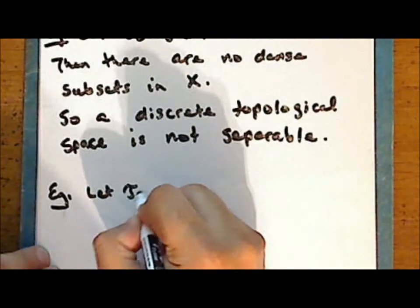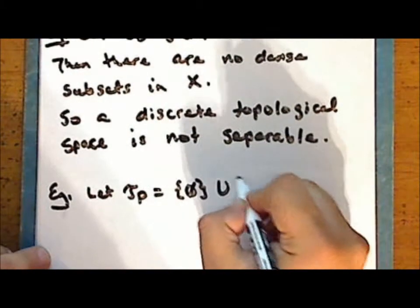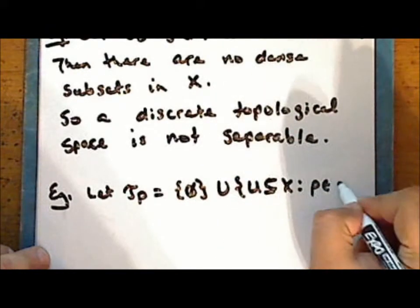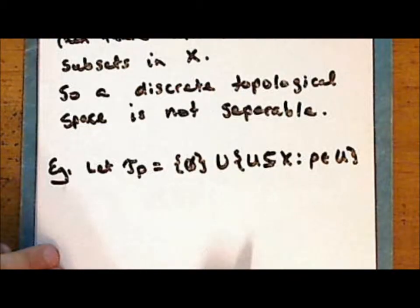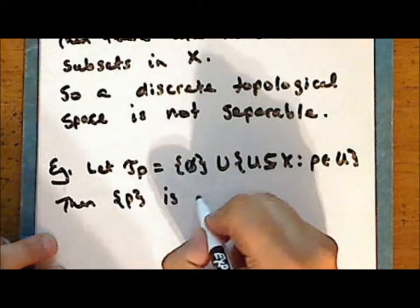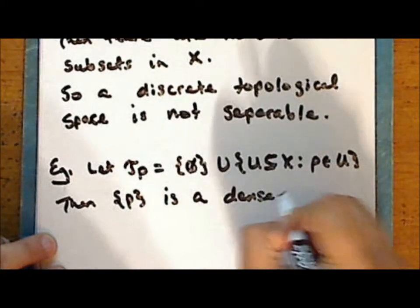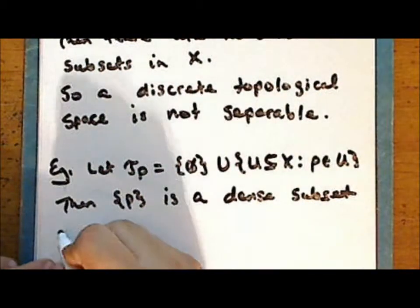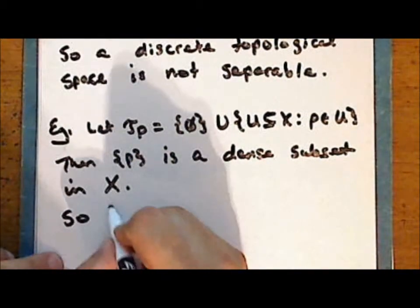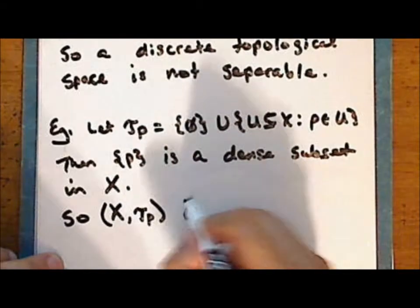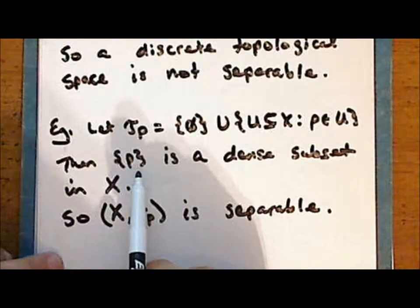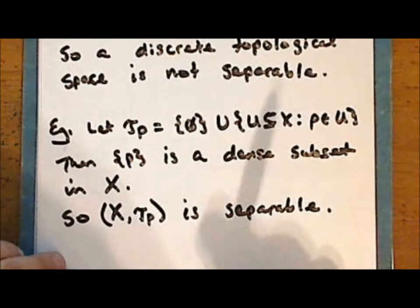Let tau sub p be the particular point topology with p the particular point. Then the singleton containing the point p is a dense subset in the space X with the particular point topology. So this space is separable as it contains a finite, and certainly countable, dense subset.